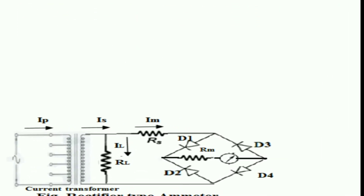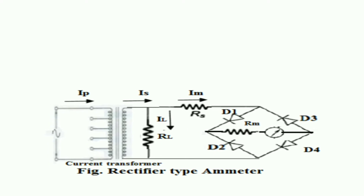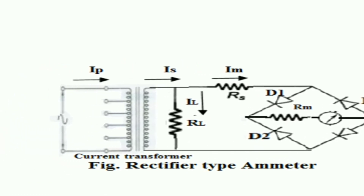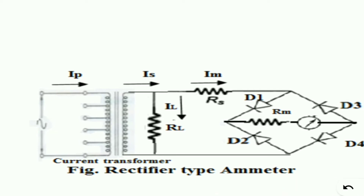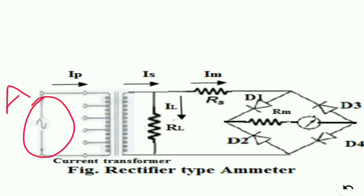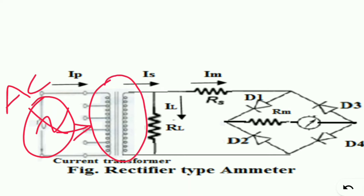This is the rectifier-type ammeter diagram. In the input we have AC supply. This is the current transformer. This is the first winding. This is the AC supply going into the second winding.